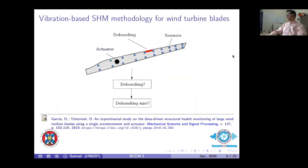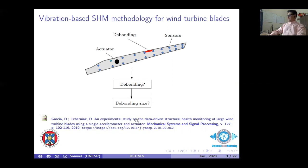Our motivation here is to quantify the debonding size in a wind turbine blade by relating the vibration measurements of a network of sensors. Using a prevalent approach, we can detect the existence of debonding, and our method correlates information to diagnose the level of severity of this damage.